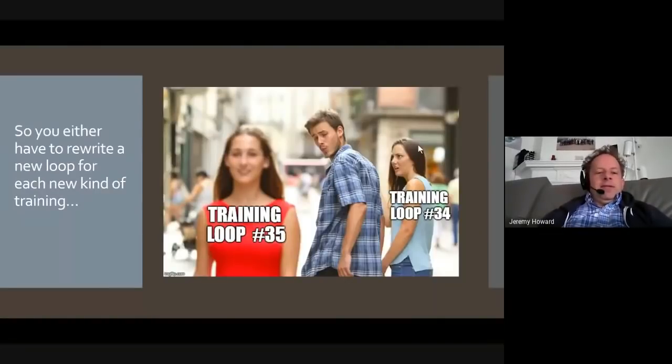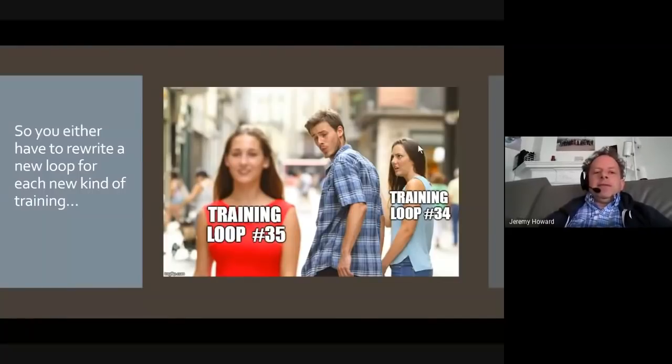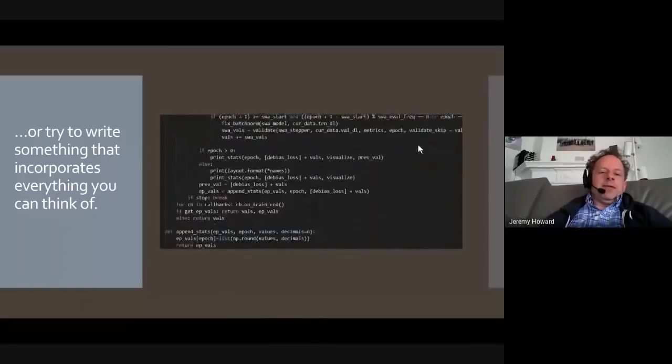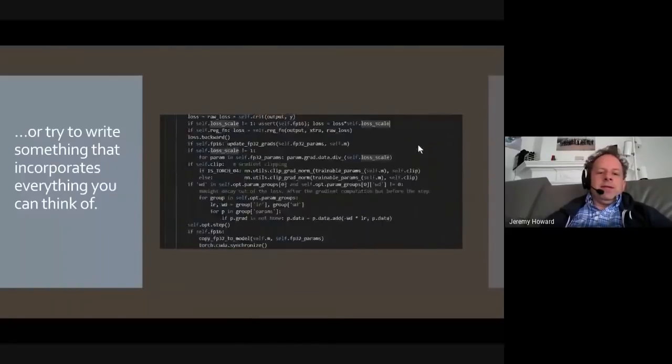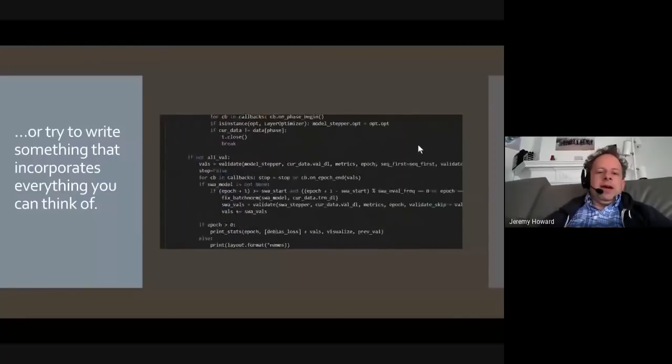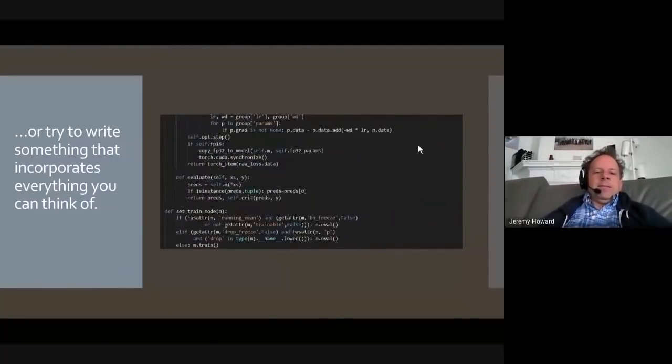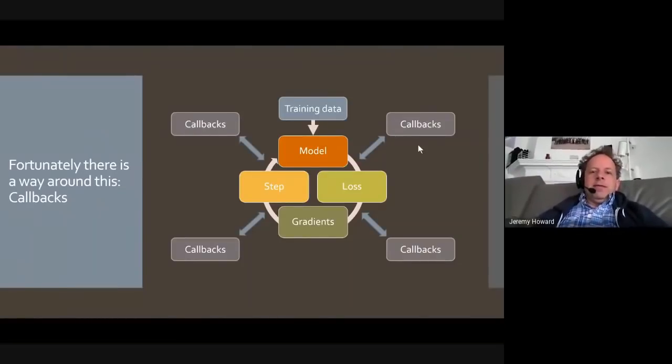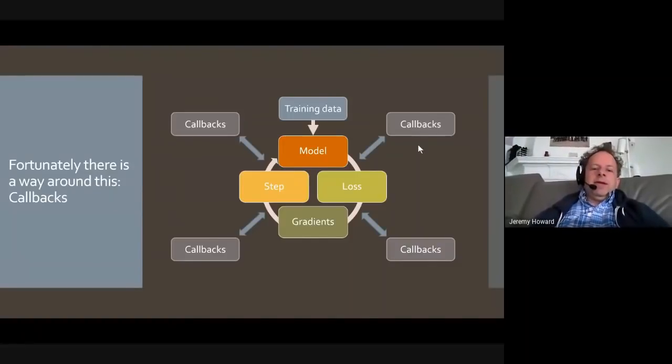So this is a problem because either you have to write a new training loop for every time you want to add a different tweak. Now, making all those tweaks work together then becomes incredibly complicated. Or you try and write one training loop which does everything you can think of. This is the training loop from FastAI 0.7 which only did a tiny subset of the things I just said but was still getting ridiculous. Or you can add callbacks at each step. Now, the idea of callbacks has been around in deep learning for a long time, APIs.